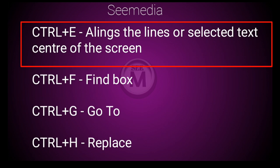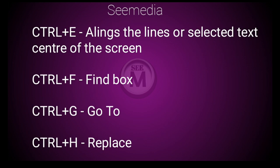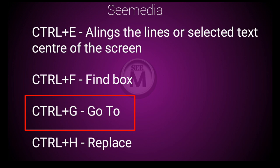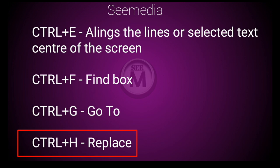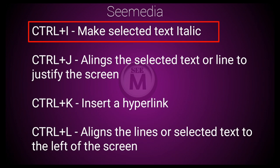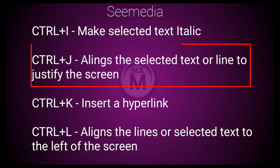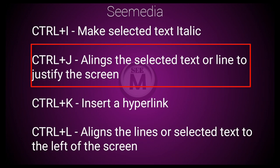Ctrl-E: Aligns the Line or Selected Text to the Center of the Screen. Ctrl-F: Find Box. Ctrl-G: Go To. Ctrl-H: Replace. Ctrl-I: Make Selected Text Italics. Ctrl-J: Aligns the Selected Text or Line to Justify the Screen.